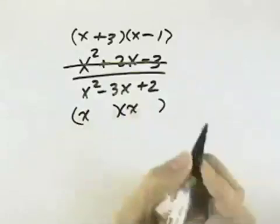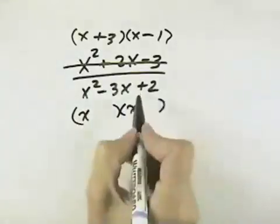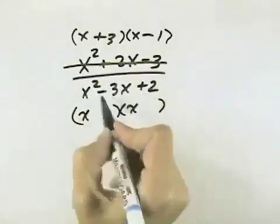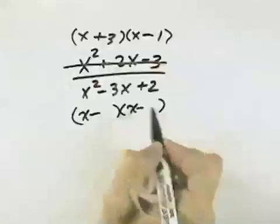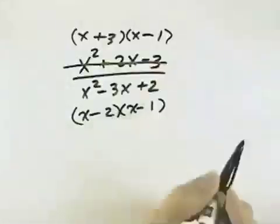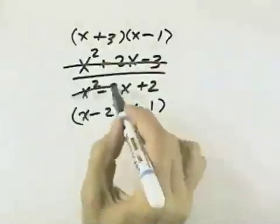For the denominator, we've got, again, the x's as our first term. Because the second sign's positive, both signs will be negative because they'll both be the same. And so that means it's a minus 2 and a minus 1, which gives us a negative 3x in the middle.